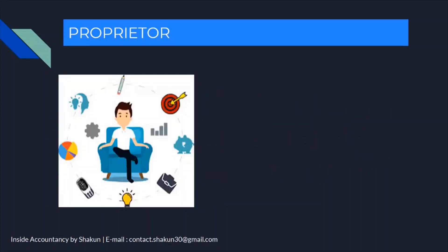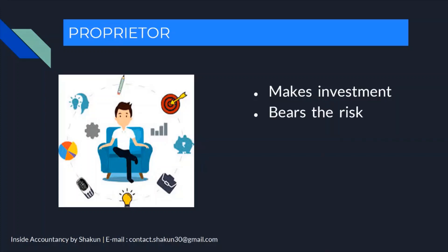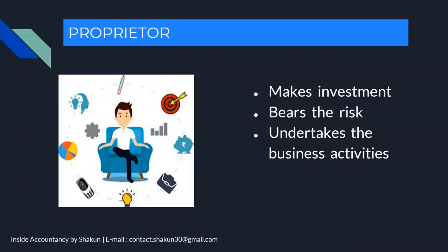Moving on to Proprietor, commonly called the owner. A proprietor is one who makes the investment, bears the risk of starting a business, undertakes all business activities, and gets all the profits or bears all the losses. For example, if you start a business with five lakh rupees, you are making an investment, bearing the risk, undertaking the activities, and at the end of the year your profit or loss is your reward.